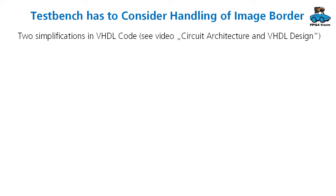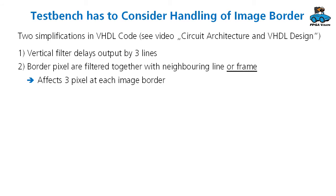Furthermore, the test bench has to consider the handling of image borders. And there are two simplifications in the VHDL code. See the video for that. One is the vertical filter delays the output by three lines. And the second simplification is that border pixels are filtered together with neighboring lines or neighboring frames.